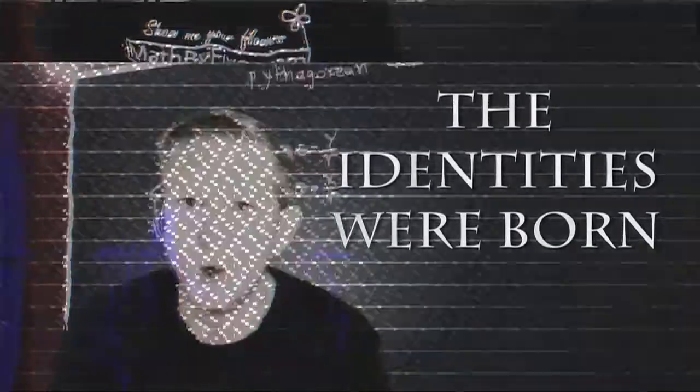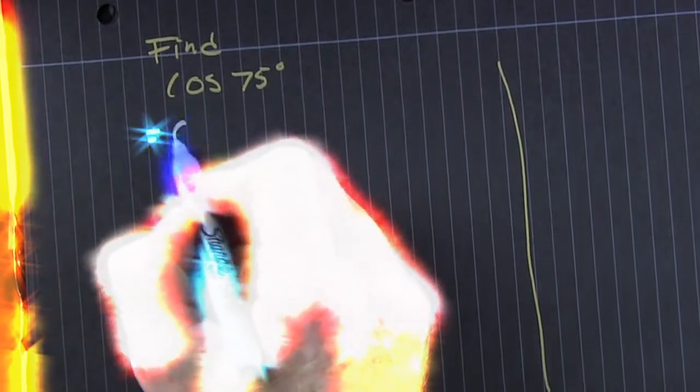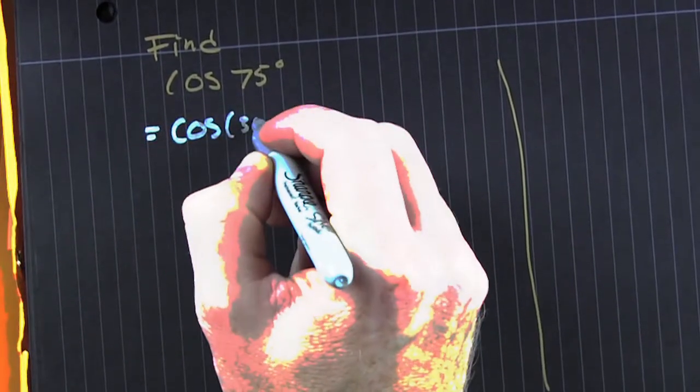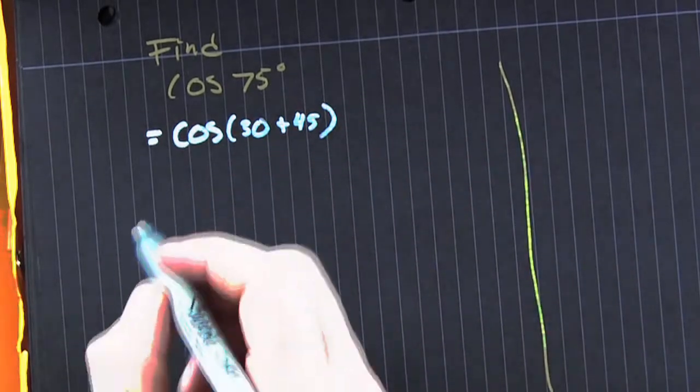And this is where the identities were born. So you're trying to find the cosine of 75 degrees exactly. You're going to need to break that up into known angles. 30 and 45 is nice.